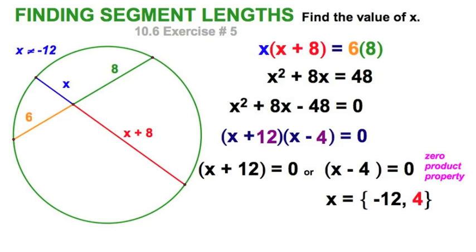The nice thing to do at this point is to do a little check. Say, well, if I were to substitute back into the original expression, I've got 4 times 12 equals 6 times 8. That checks out all right. So the blue segment is 4 and the red segment is 12. So I guess we're done with that.